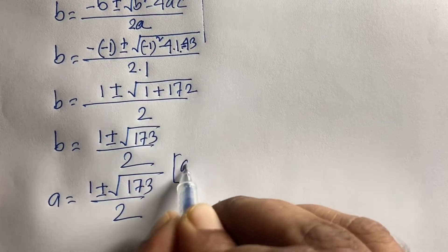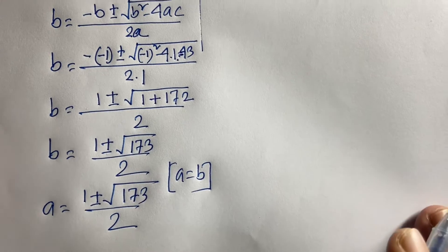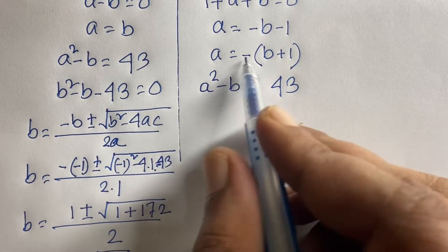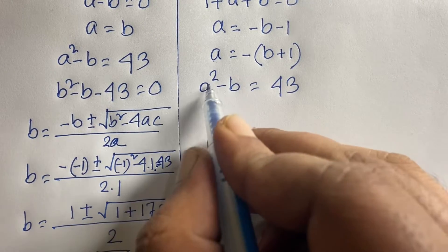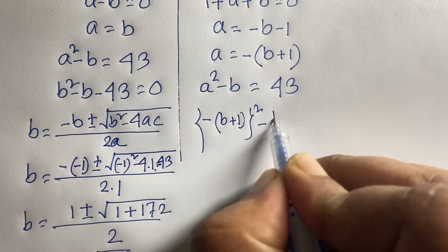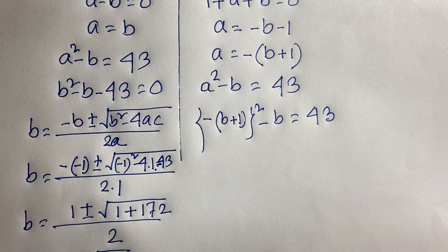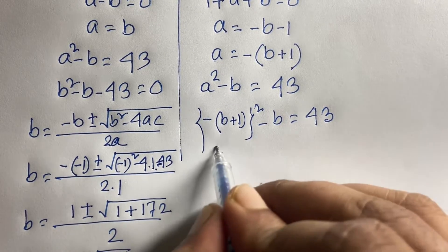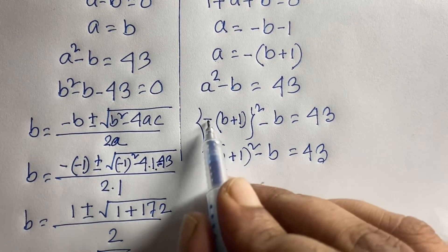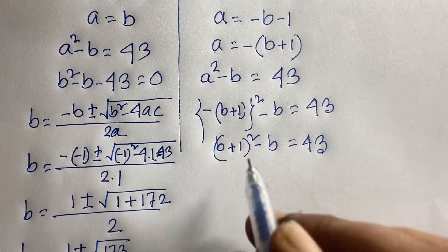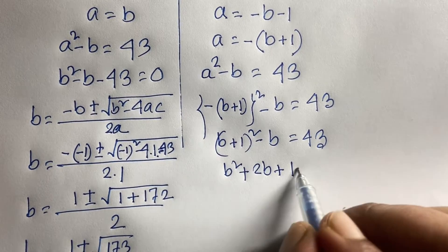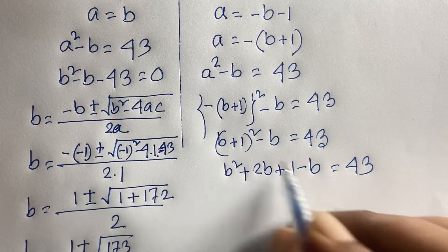For Case 2, A squared minus B equals 43, and A equals minus(B plus 1). Substituting gives (minus(B+1)) squared minus B equals 43, which simplifies to (B+1)² minus B equals 43, since the negative power is even. Expanding using (a+b)² = a² + 2ab + b², we get B squared plus 2B plus 1 minus B equals 43.